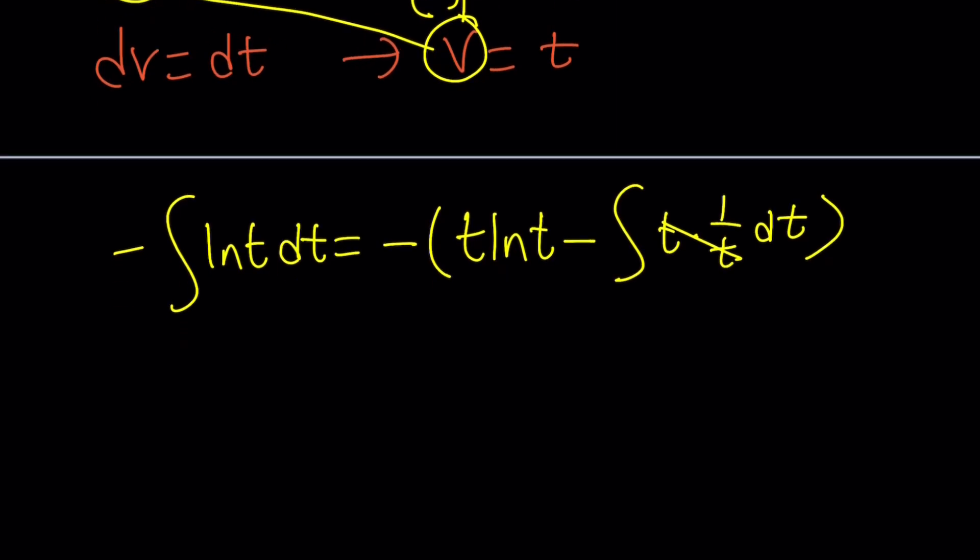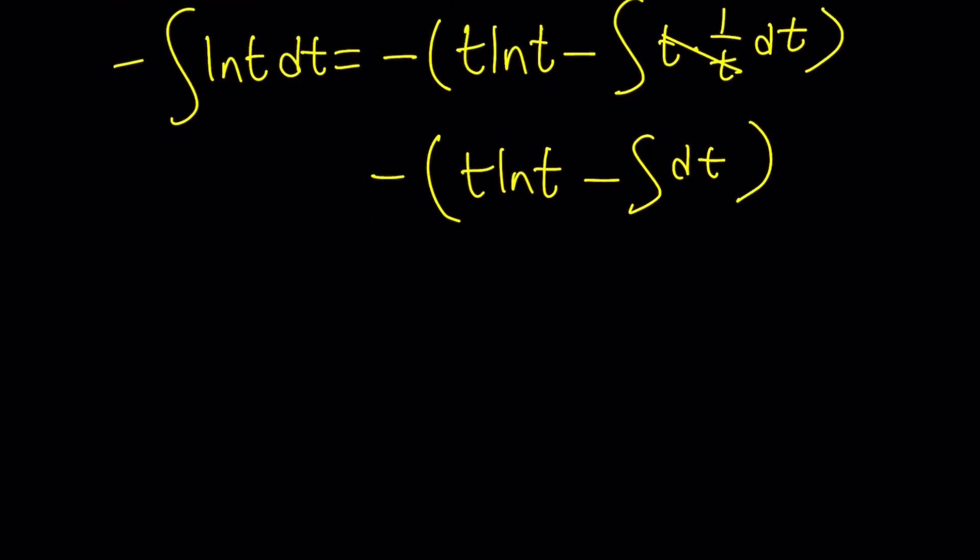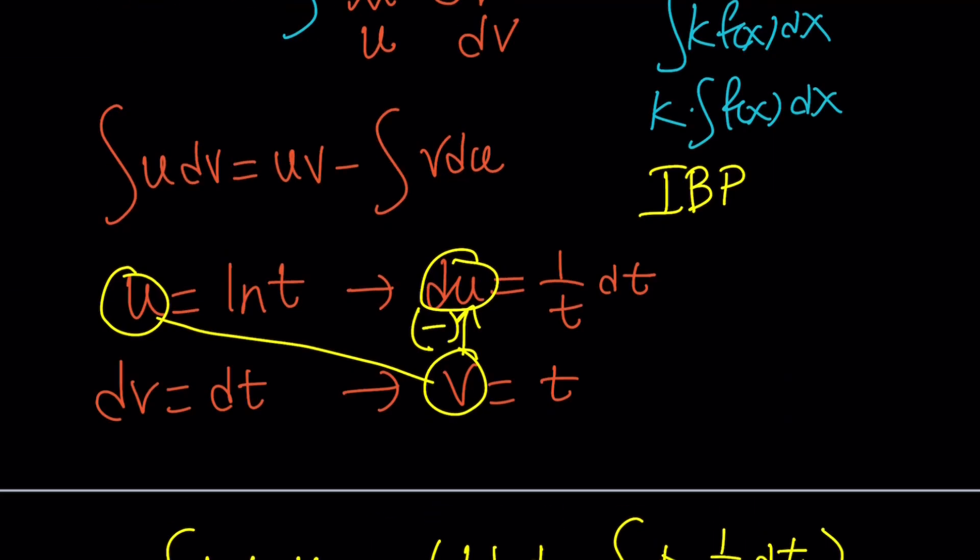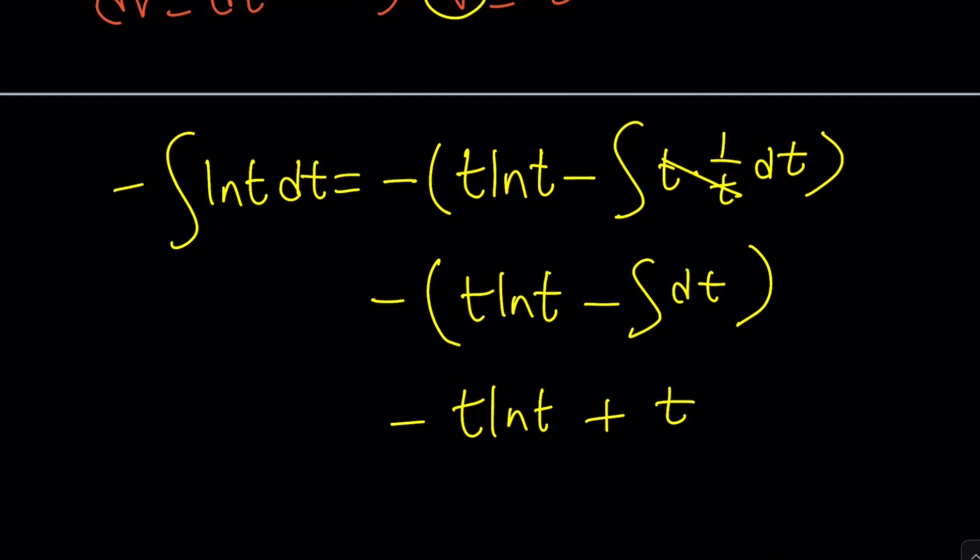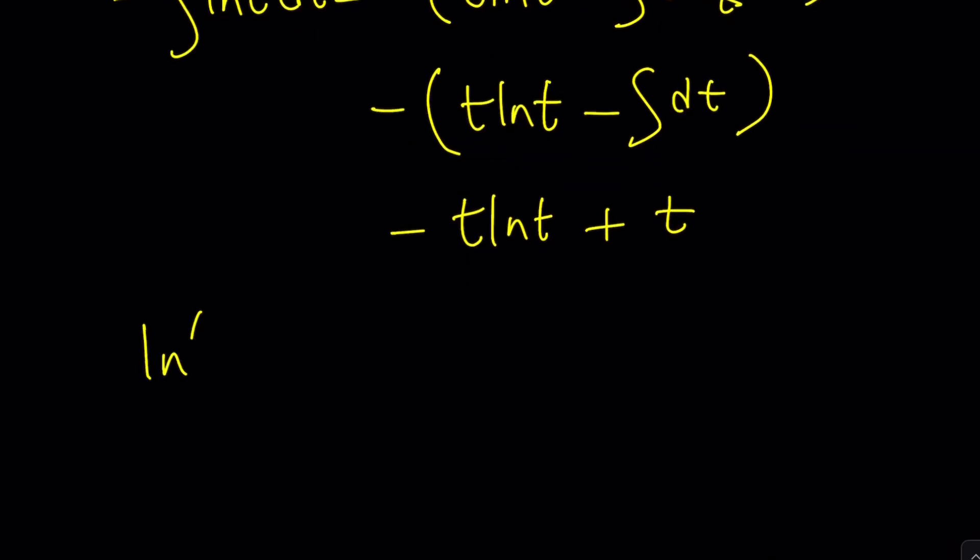tln t minus dt. And obviously, if you integrate dt, you're going to get t. And this is going to give me minus t, but with a minus sign, it's going to be a plus t. So that's going to be my integral. So the integral of ln negative x should be this.